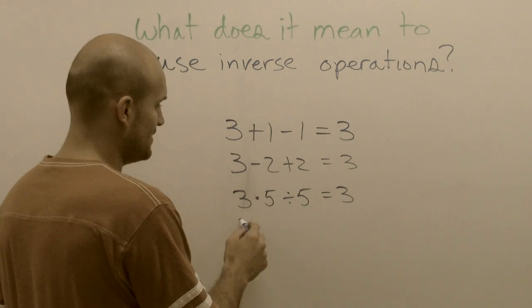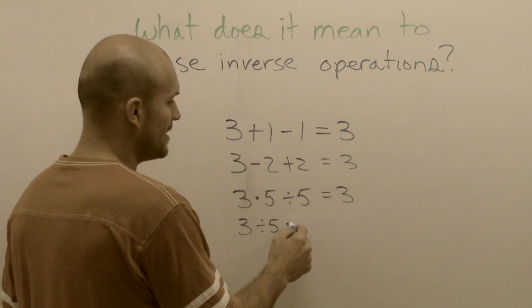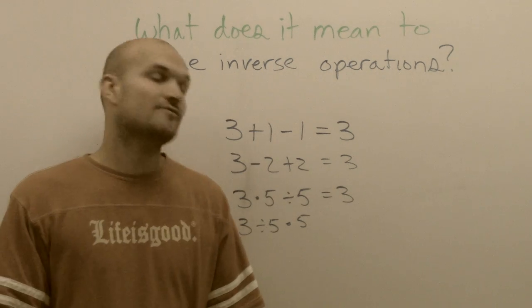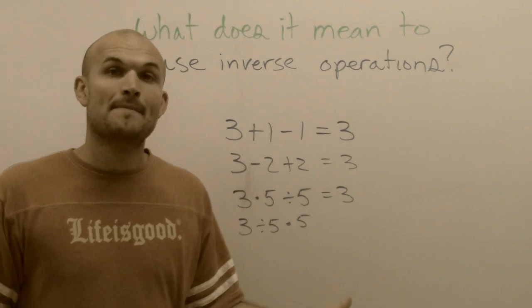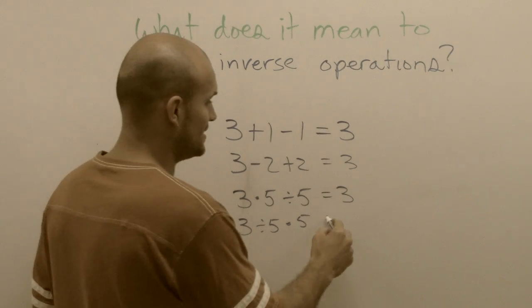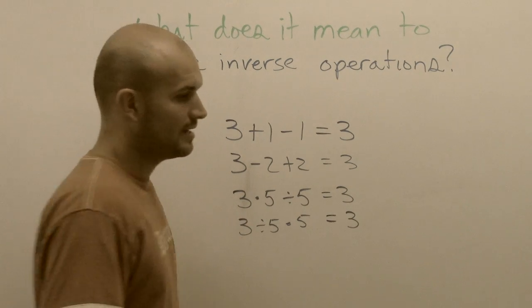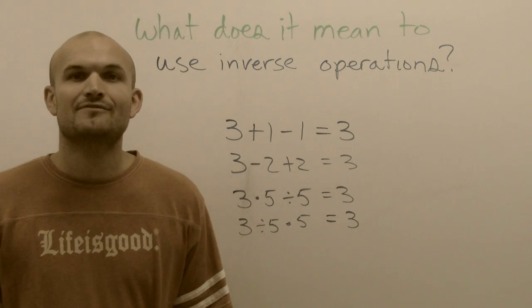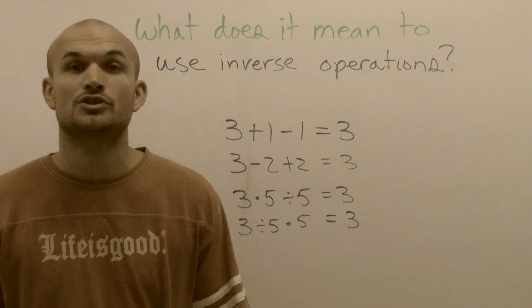It works the same way even if you're going to take three divided by five and then multiply by five. Well, three divided by five will just leave us three fifths, multiply that by five, the fives will cancel out leaving you just with a three. So when we're talking about inverse operations, they're operations that undo each other.